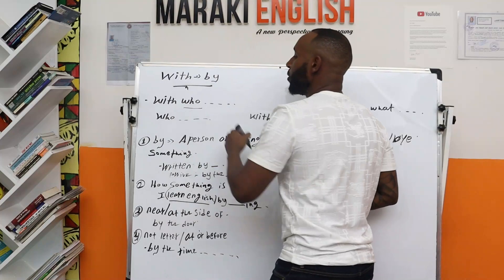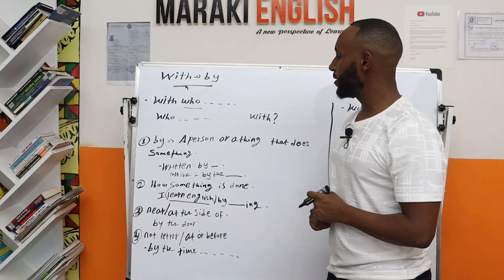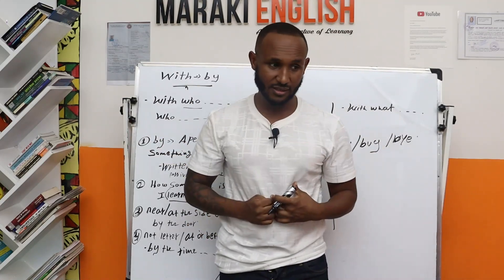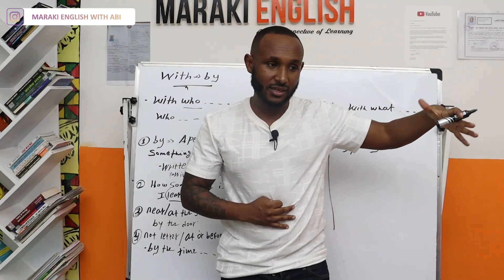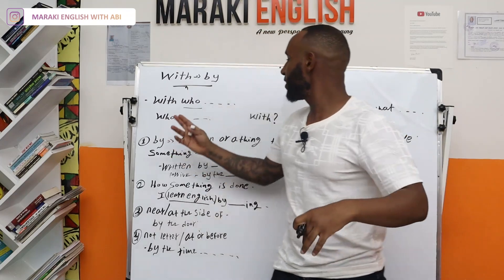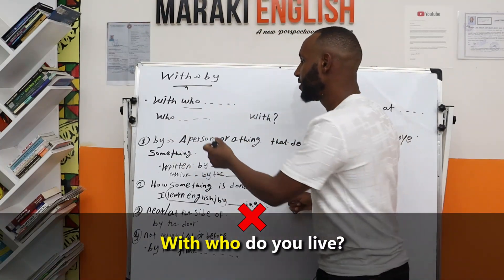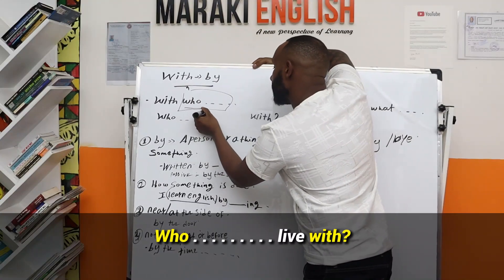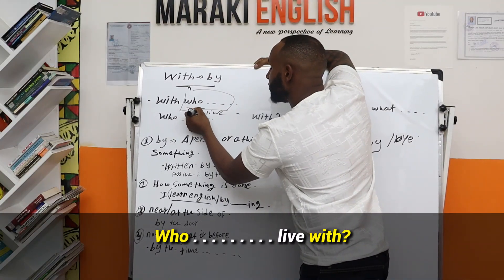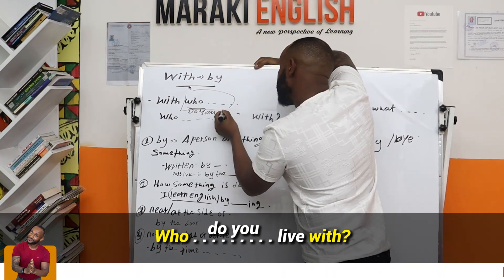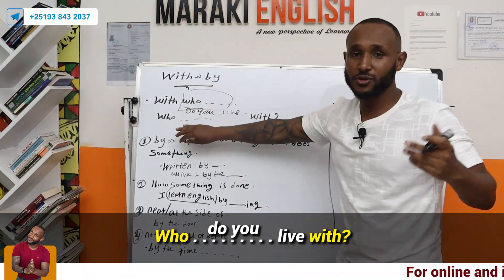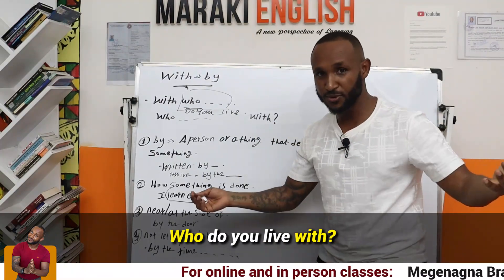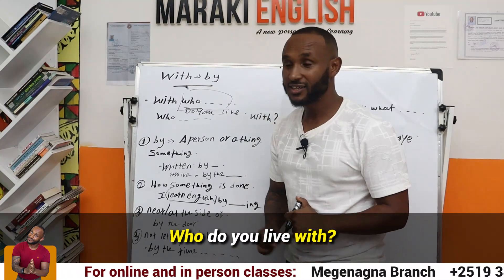The first one: 'with who.' If you want to ask about the person someone does something with — for example, if you want to ask me about the person who lives with me — you don't say 'with who do you live.' We break it apart and say 'who' at the start, then finish with 'with' at the end. For example: 'Who do you live with?' And you're asking me the person I'm living with. Simple. Who do you live with?